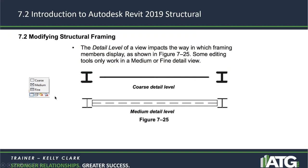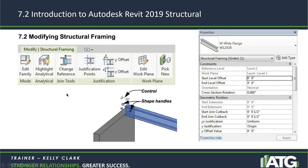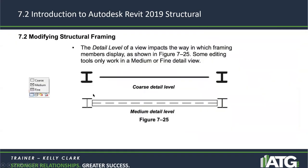If you are set to fine or medium detail, then when you select a beam, you will get the option to change the reference. If you are not in fine or medium — if you're in coarse — you will not get that option at all.